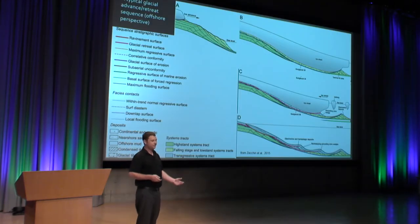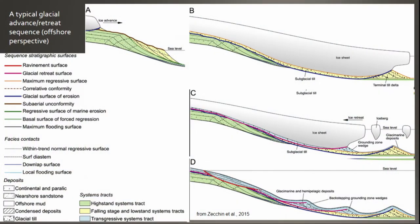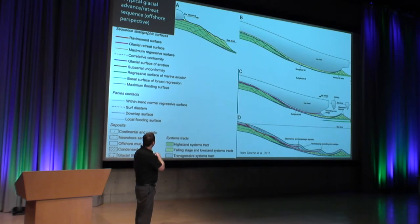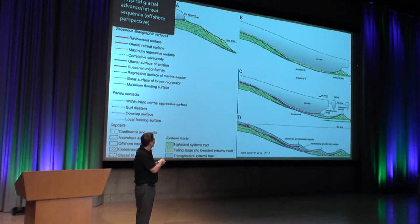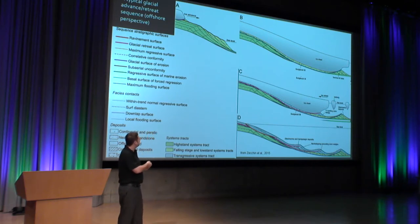What do glaciers do? This is what we would expect to see if we could slice through the earth along where a glacier has advanced and receded. We would see patterns like this. Essentially, as the ice advances, it bulldozes all this sediment into the ocean, destroying some of the previous sediment and filling in the basin. As it retreats, it also leaves a trail of sediment behind it.